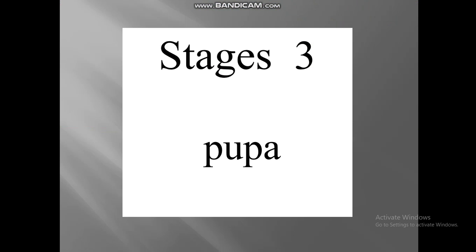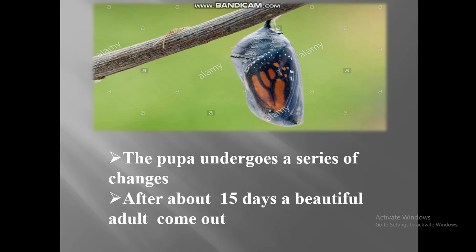Stage number 3: pupa. The pupa undergoes a series of changes. After about 15 days, a beautiful adult butterfly comes out.